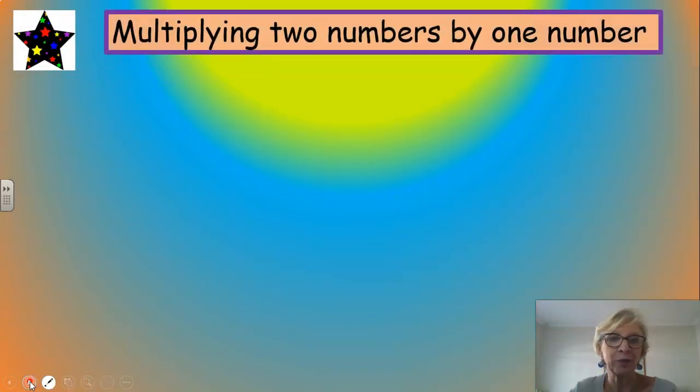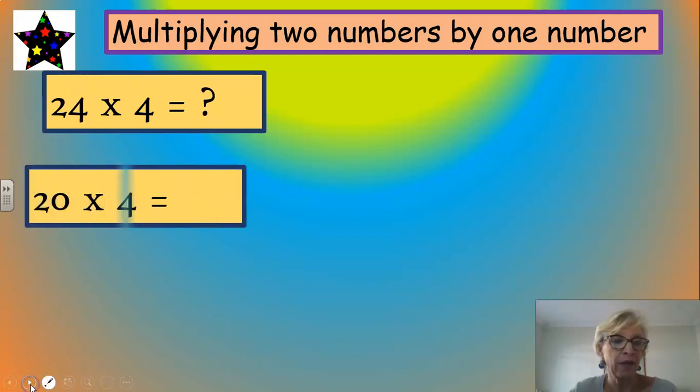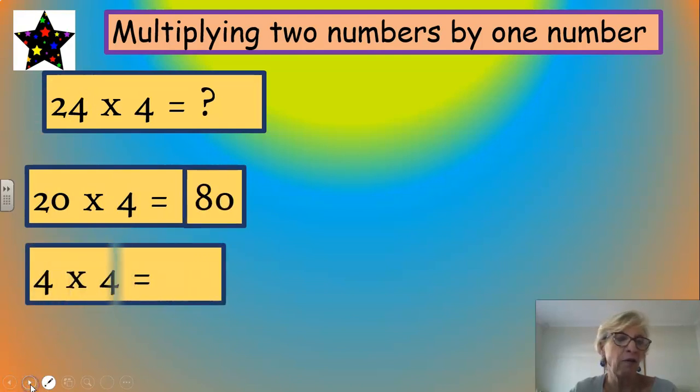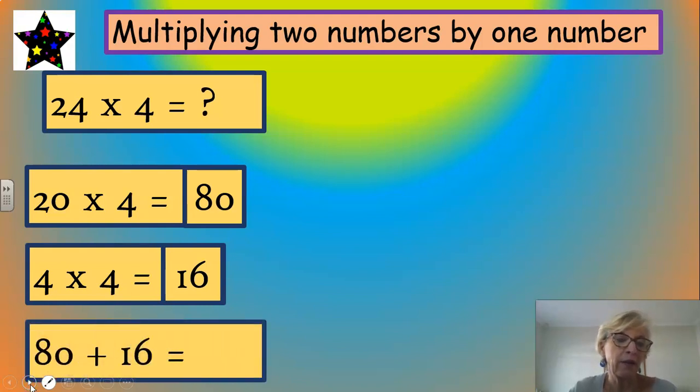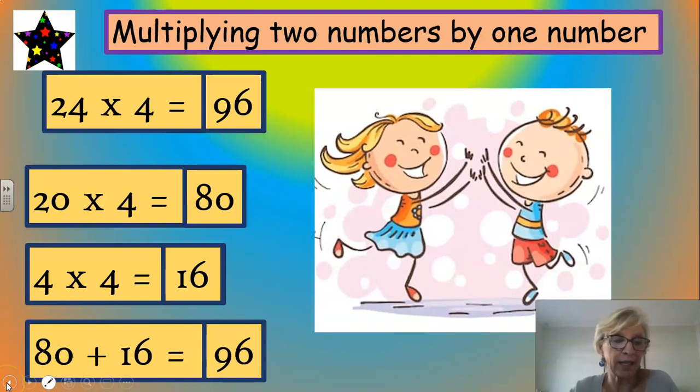Right. Here's another example. Multiplying two numbers by one number. 24 times 4. I'm going to split the number 24 into 20 and 4. 20 times 4 is 80. 4 times 4 is 16. See how important it is that you know your table so that you can answer these multiplication tables quickly. And then we're going to go 80 and add 16, it's going to give us a solution of 96. And we can do a little dance and a little jig. Well done.